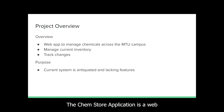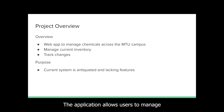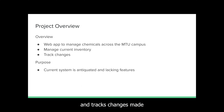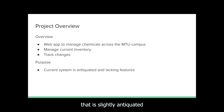The ChemStore application is a web app to manage the inventory of chemicals in labs across Michigan Tech's campus. The application allows users to manage the current inventory of chemicals and tracks changes made through the application. This app is intended as a replacement for some software that the chemical stores already use that is slightly antiquated and lacks some features.